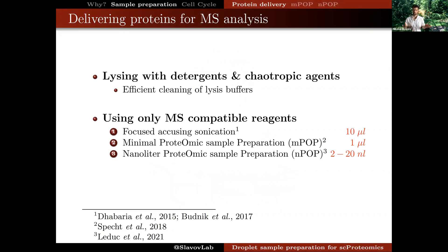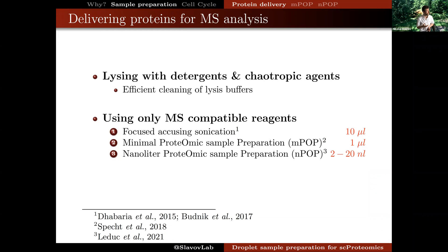To give a historical perspective, I'll start with methods using detergents and chaotropic agents that are able to efficiently lyse cells and extract proteins for analysis. Oftentimes these chemicals are incompatible with mass spectrometers and therefore have to be removed, and this removal process can also result in protein losses which could be prohibitive for very small samples such as single cells.